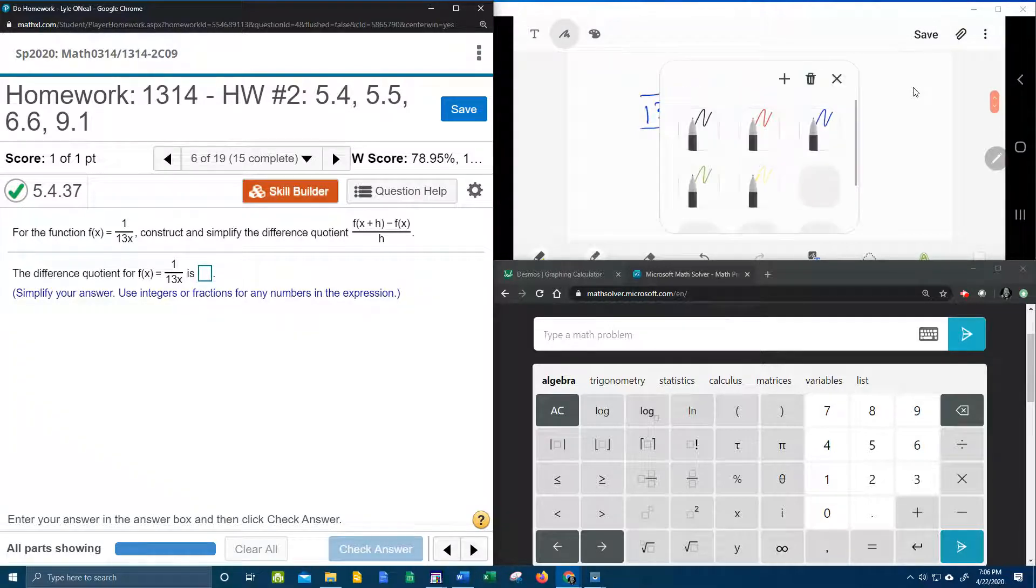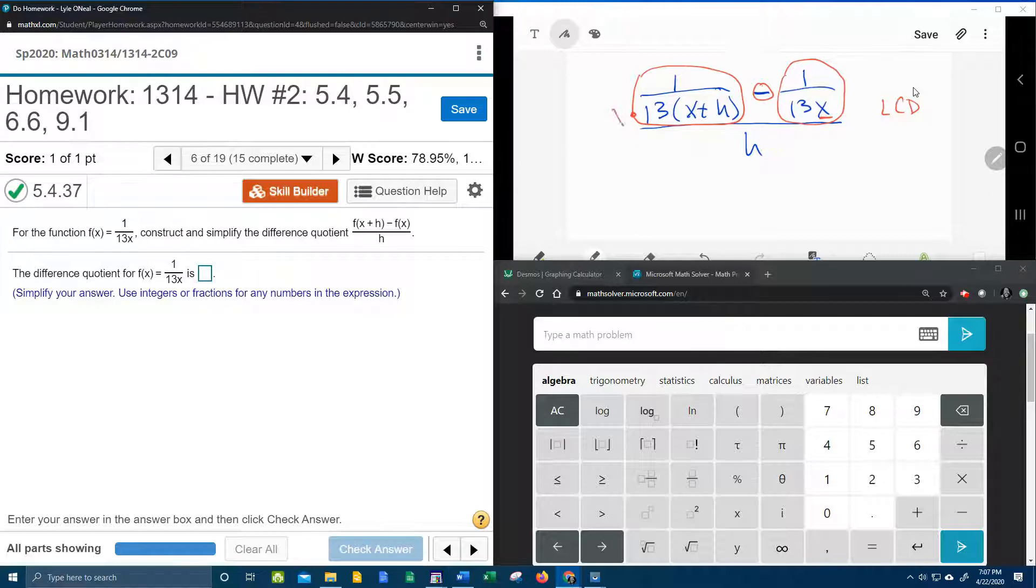What I'm going to notice is that I have two fractions, and I'm trying to subtract. If you're trying to subtract two fractions, you need to find a common denominator. In this case, we're going to find the lowest common denominator. What I notice is that this second fraction has an x by itself that the first fraction doesn't, so it's going to need an x.